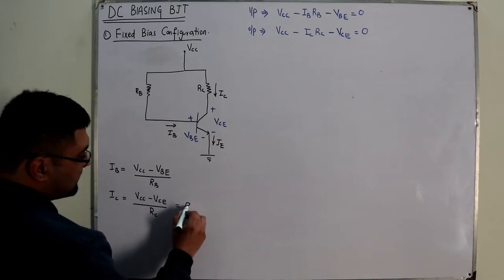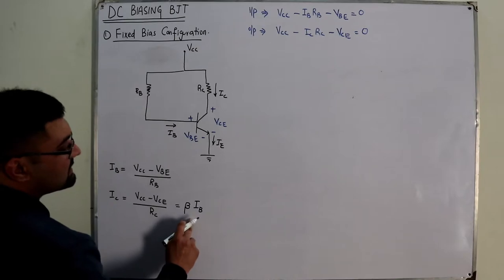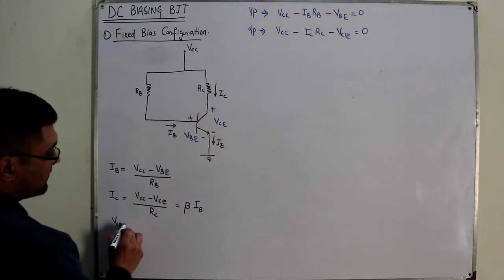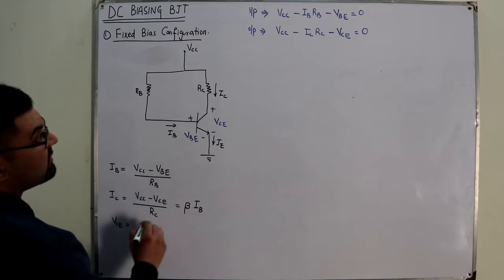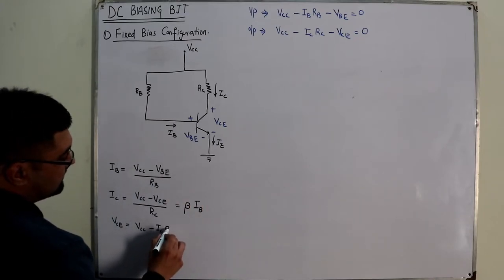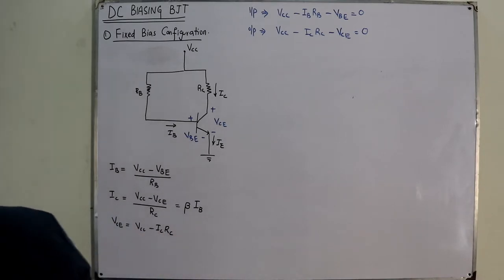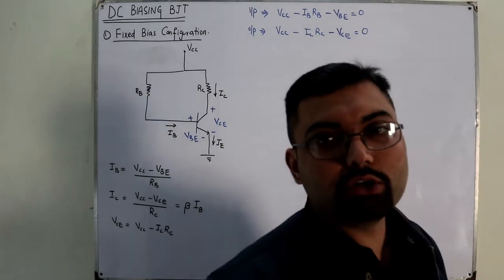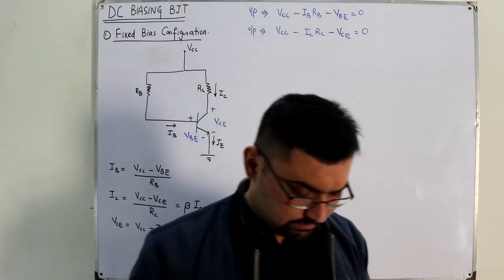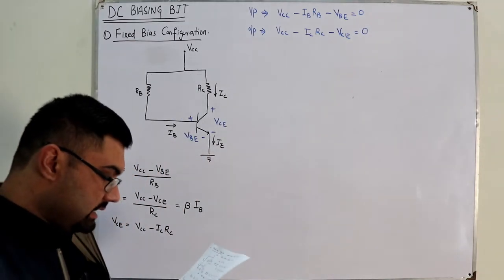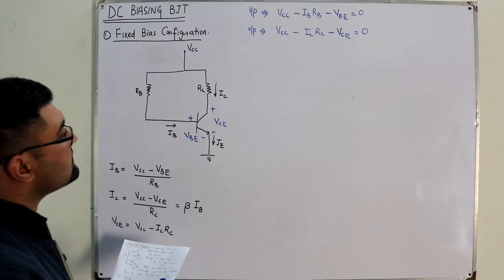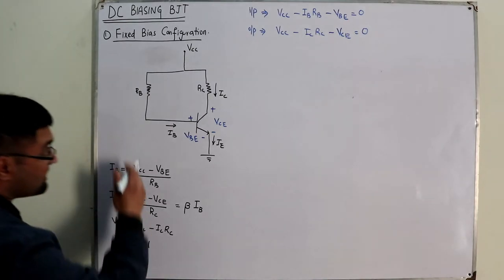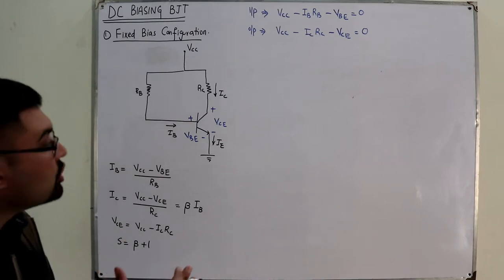You could also write IC as beta times IB. Most of the time you will use IC = β·IB. The output voltage VCE is often unknown, so VCE equals VCC minus IC·RC. If VCE is greater than 0.2 volts the transistor is in the active region; if it is less than 0.2 volts it is in the saturation region. The sensitivity factor for this configuration is β+1, as seen in the previous video.